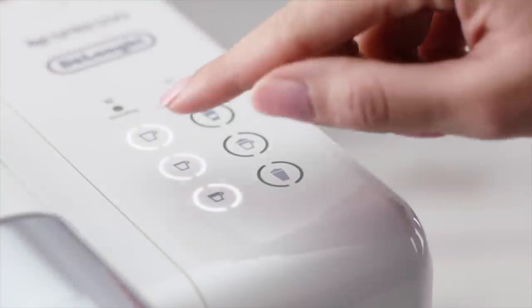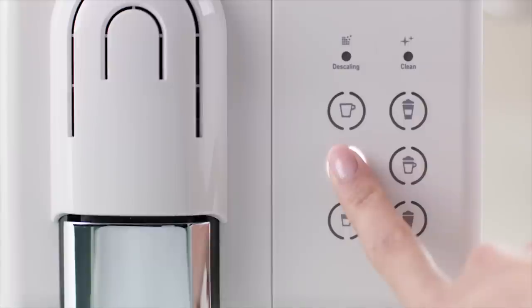To begin, press and hold the desired coffee selection for three seconds. This will enter programming mode. The button will blink fast and brewing will start.